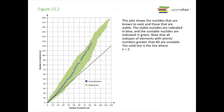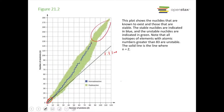On the stability plot, the blue band represents stable non-radioactive atoms, the green region around it represents radioactive isotopes, and the black line is the 1:1 neutron-to-proton line. Lighter elements fall on that 1:1 line. Notably, when atomic number exceeds 83, everything is unstable.